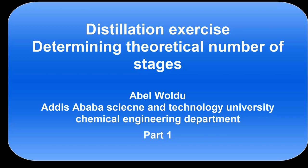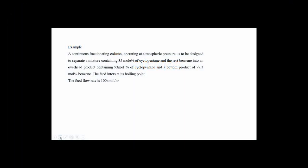Today I bring you an example for continuous distillation column design. As we have seen in my previous videos, we derived how we can determine the number of theoretical stages for a continuous distillation column. Here is one example: a continuous distillation column operating at atmospheric pressure is to be designed to separate a mixture containing 35 mole percent cyclopentane and the rest benzene.